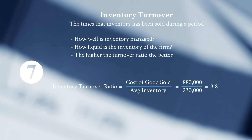Inventory Turnover is calculated as cost of goods sold divided by average inventory level. In this case, a turnover of 3.8 means inventory is sitting for almost three months at a time — which may be acceptable for large manufacturing or construction, but not ideal for retail.